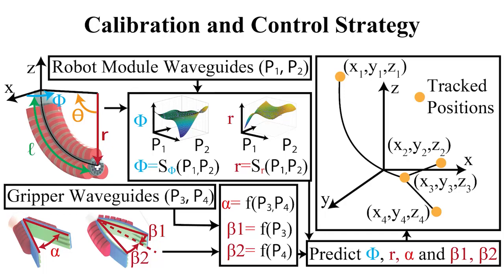The gripper tracks waveguide sensor signals versus deployment angle alpha and bending angles beta 1 and beta 2, and utilizes optical gain through the system to differentiate bending from contact.